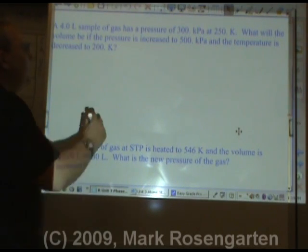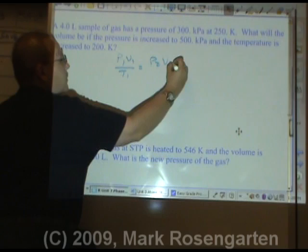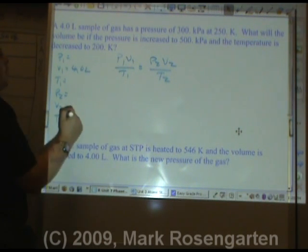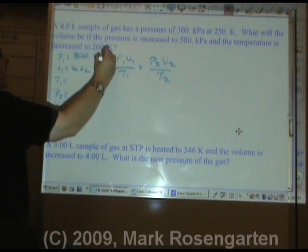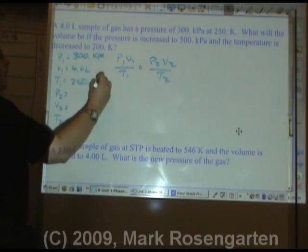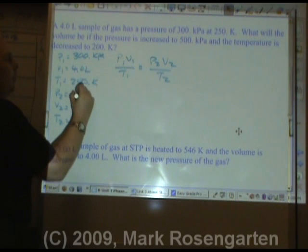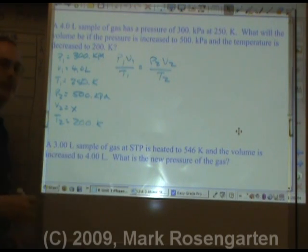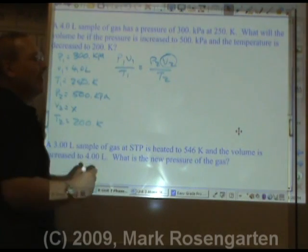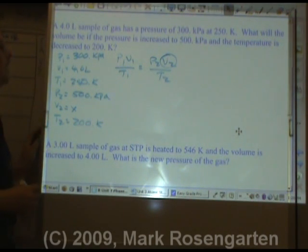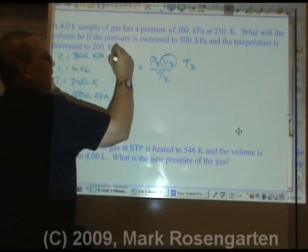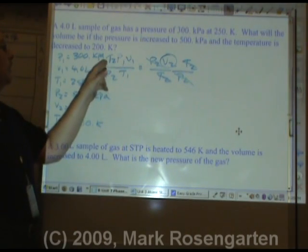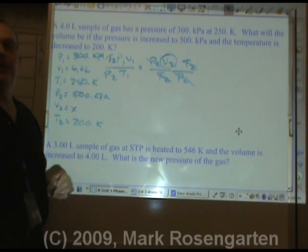Combined gas law problem: P1 V1 over T1 equals P2 V2 over T2. A 4.0 liter sample of gas has a pressure of 300 kilopascals at a temperature of 250 kelvin. What will the volume be if the pressure is increased to 500 kilopascals and the temperature is decreased to 200 kelvin? We're trying to solve for V2. Nothing is constant — we keep everything. To get V2 by itself, multiply both sides by T2 and divide both sides by P2. That way the units for temperature cancel and the units for pressure cancel, leaving us with the units for volume.